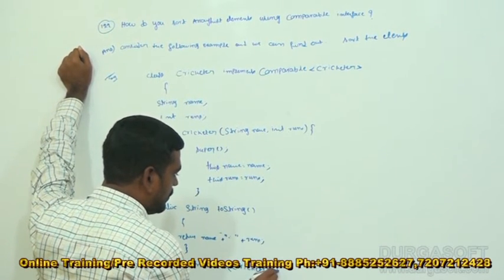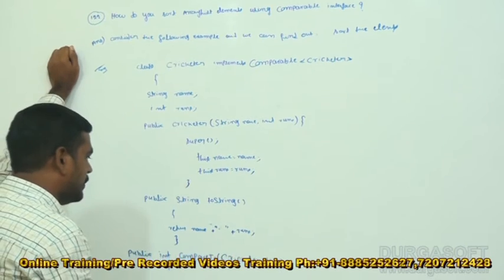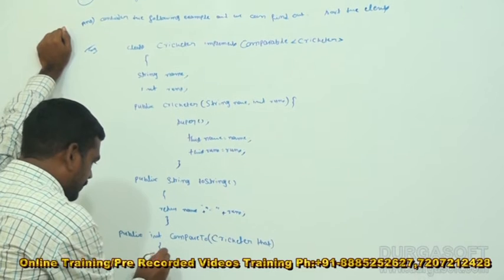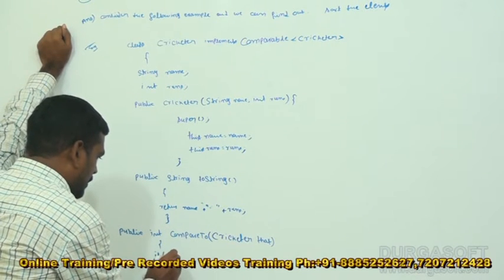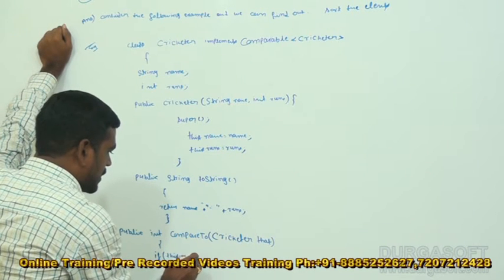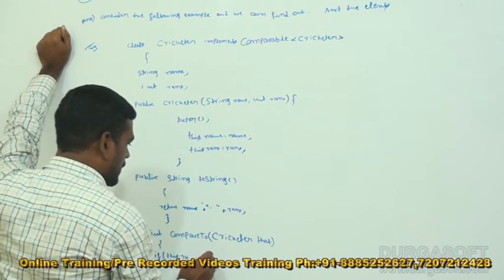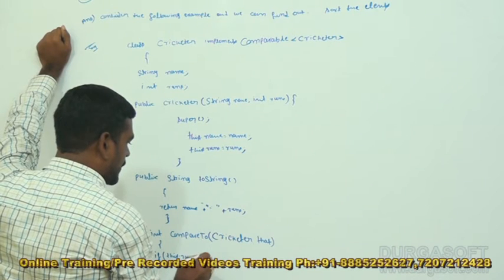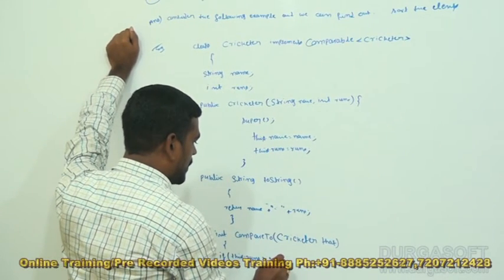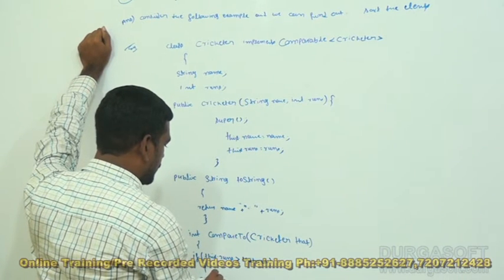Inside compareTo, if this.runs is greater than that.runs, return 1.